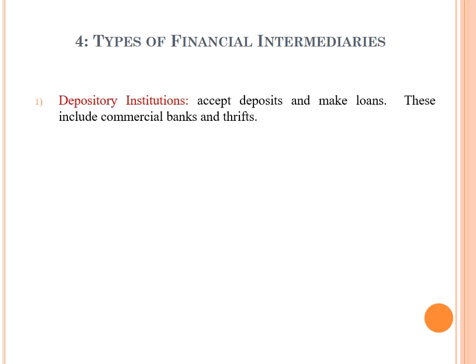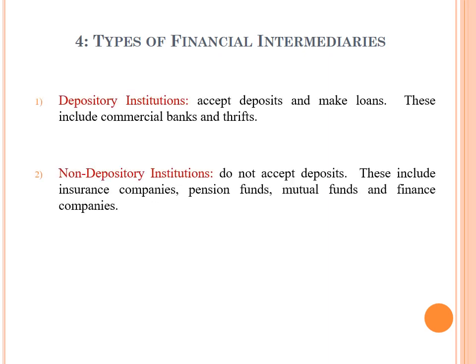We have two main types of financial intermediaries. The first one is depository institutions and the second one is non-depository institutions. Depository institutions accept deposits and make loans. These include commercial banks and trusts.